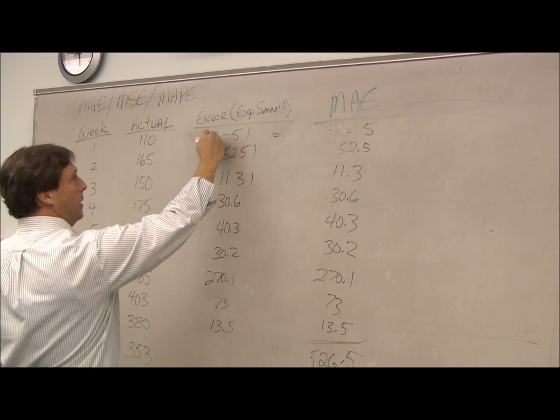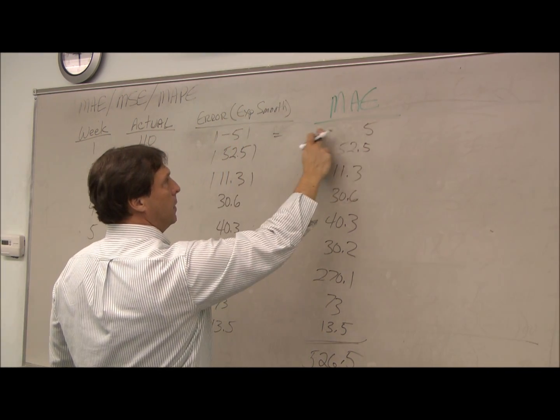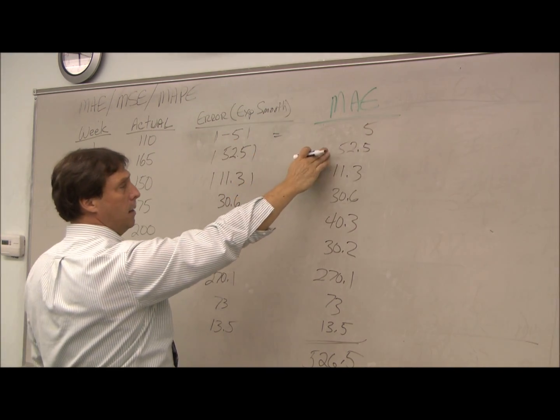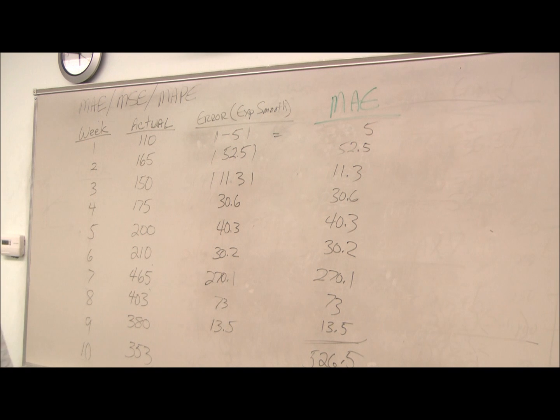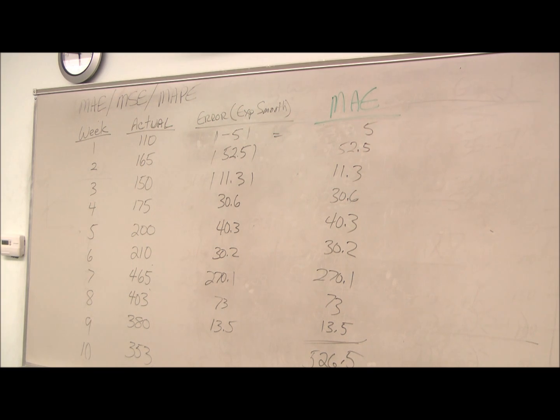We've bracketed an absolute, so this changes a negative to a positive. My negative 5 becomes 5, 52 remains 52, because all we're interested in is how much it varies from the actual, not if it's positive or negative.